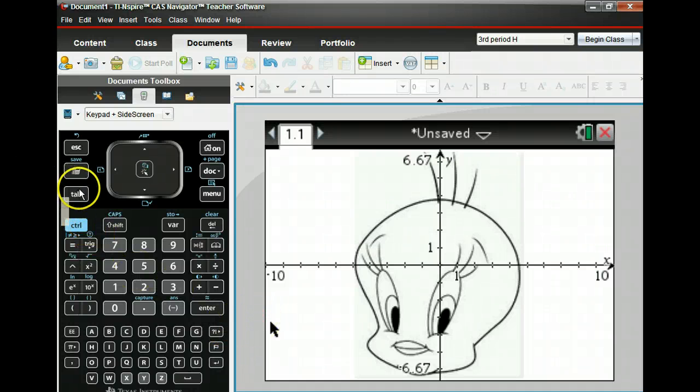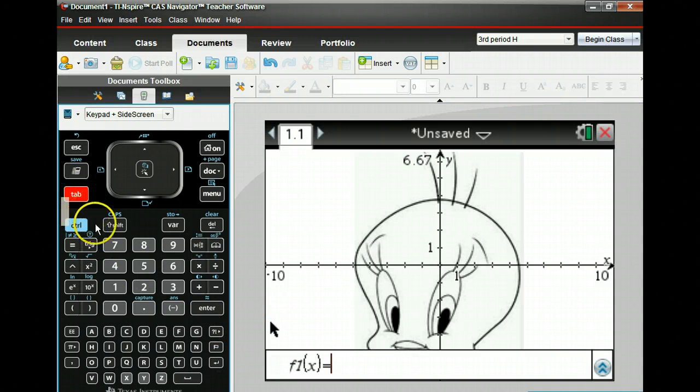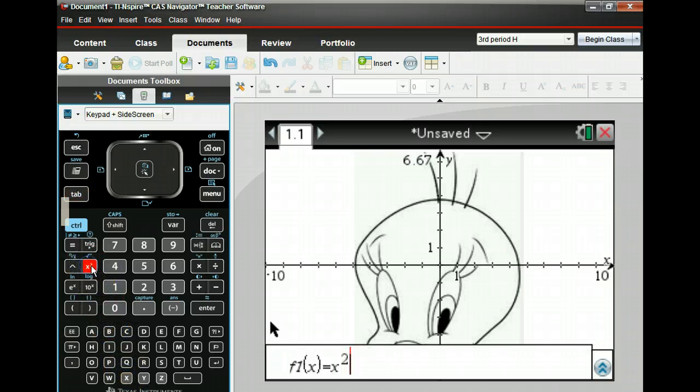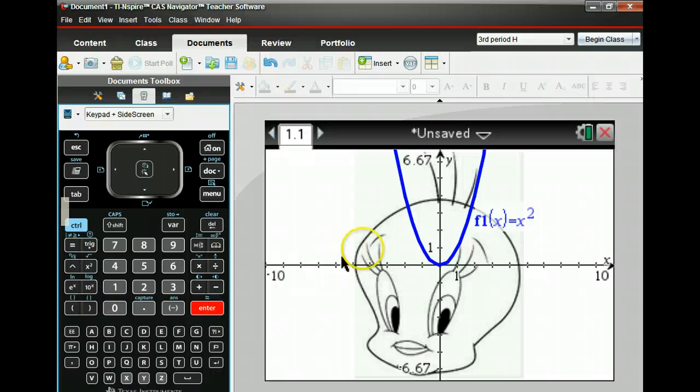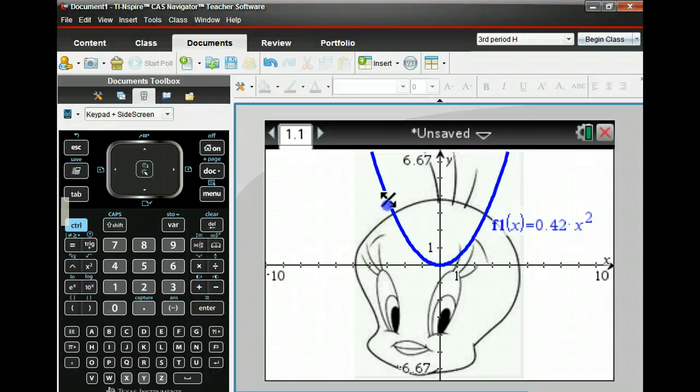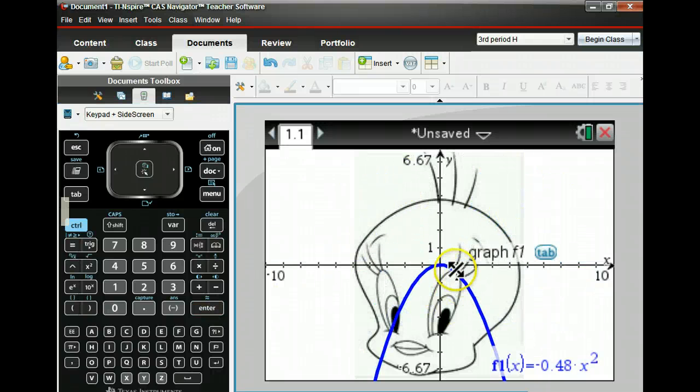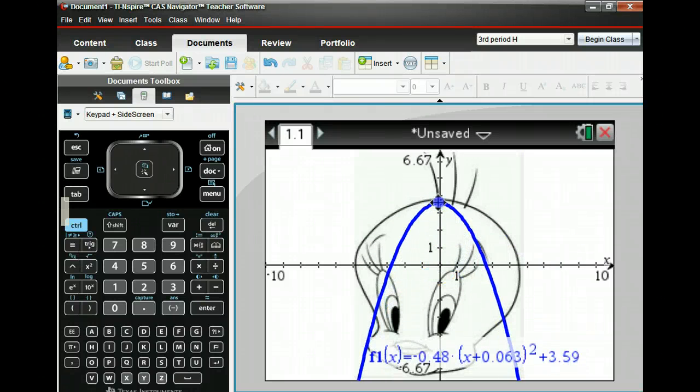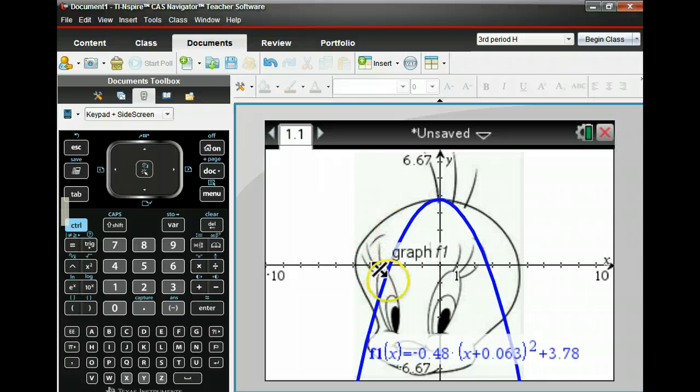To restrict your domain, first type in a function, maybe a quadratic like x squared. Enter that here, and you can grab this and move it. If you grab near the vertex, you can actually move the vertex up to where you want it. Maybe that's going to be the top of the head there.